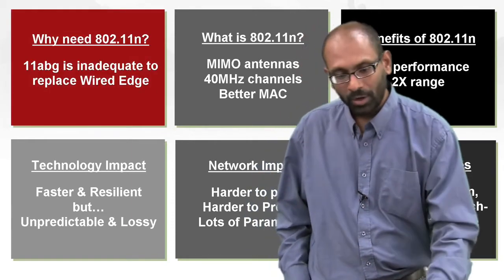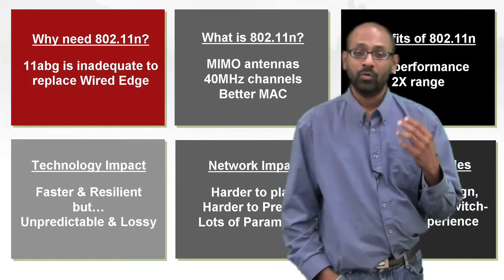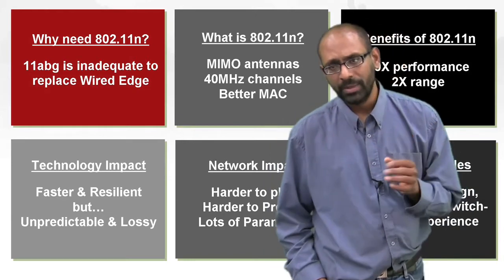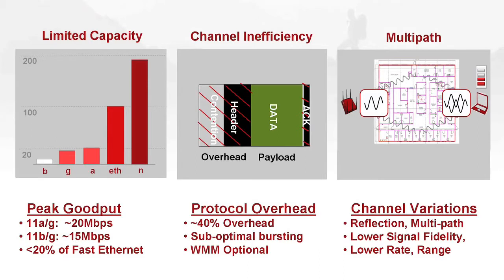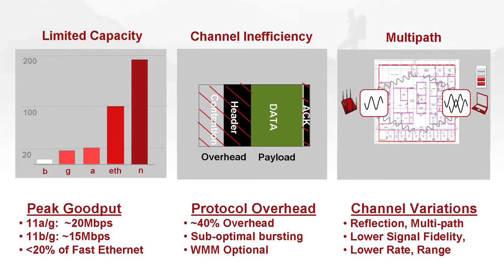So the first key point is why we need 802.11n at all. And if you go back and look at the limitations of 802.11abg, there are fundamentally three. The first one is limited capacity. The second one is channel inefficiency. And the third one is the inability of the standard to handle multipath, in other words, how susceptible it is to RF level loss.